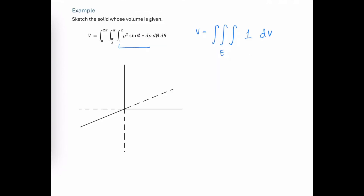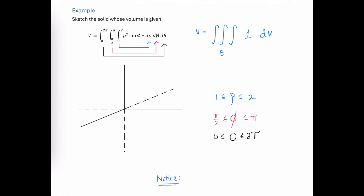Our values for rho are going to go from 1 to 2. The values of phi are going to go from pi over 2 to pi, and the values of theta are going to go from 0 to 2 pi.